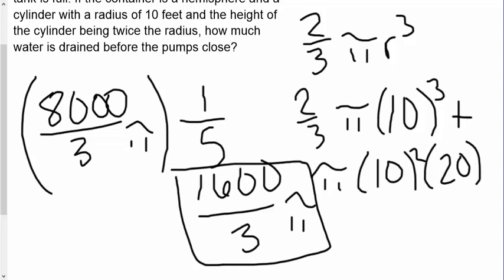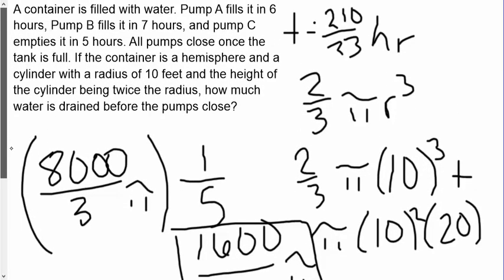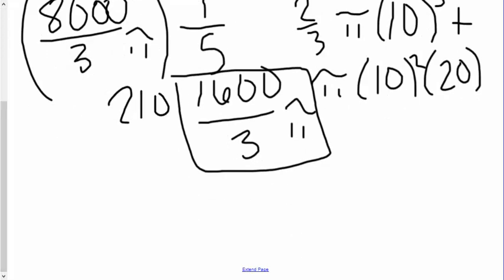Right? So pump C is emptying this at one-fifth of an hour. It's emptying one-fifth of the container per hour. Then that means that each hour sixteen hundred over three pi cubic feet is being emptied. So now we just have to multiply by how many hours? Two hundred and ten over twenty-three. Right? Two hundred and ten over twenty-three. And we multiply that right now, and that will tell us how much total water is being wasted.